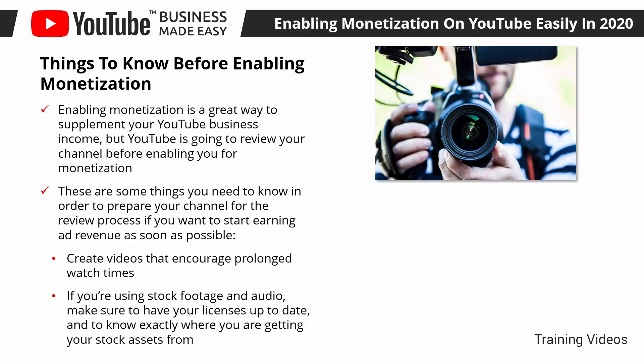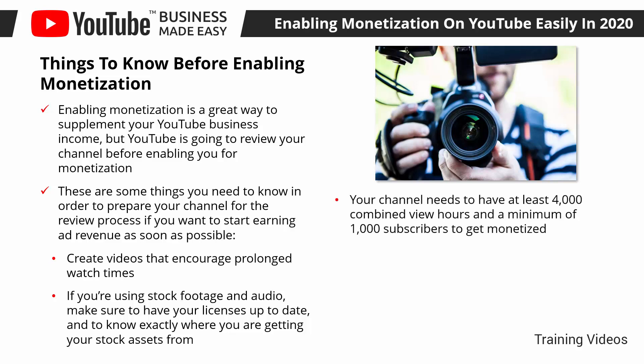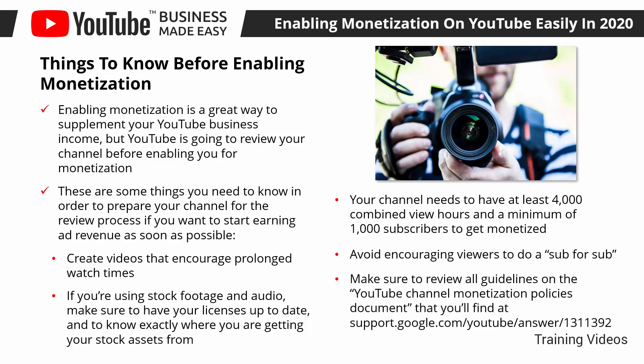This will help you avoid duplication claims as a reason for non-approval. Your channel needs to have at least 4,000 combined view hours and a minimum of 1,000 subscribers to get monetized. These numbers aren't difficult to achieve if you produce quality content. It is also necessary to do an SEO audit on your published videos so you can optimize your content for maximum visibility, which will help you reach those numbers more easily. Avoid encouraging viewers to do a sub for sub — YouTube will deny your application if you use sub for sub as an engagement strategy. Instead, call viewers to subscribe, like, and turn on notifications. Make sure to review all guidelines on the YouTube channel monetization policies document at support.google.com/youtube/answer/1311392.